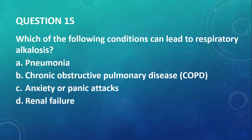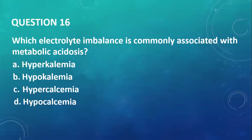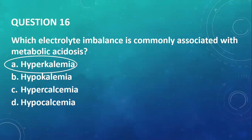Question number fifteen: which of the following conditions can lead to respiratory alkalosis? Any condition that makes you hyperventilate — such as anxiety or panic attacks, which are usually accompanied by hysteria, shouting, screaming, and hyperventilation. Question number sixteen: which electrolyte imbalance is commonly associated with metabolic acidosis? The answer is hyperkalemia, except for the acidosis that comes with diarrhea — that particular acidosis is hypokalemic acidosis.